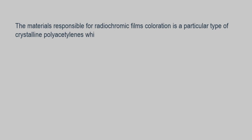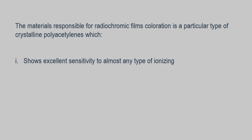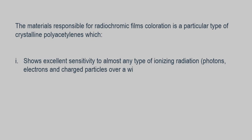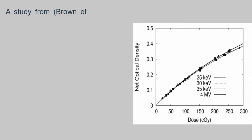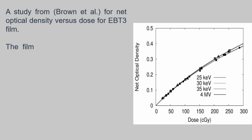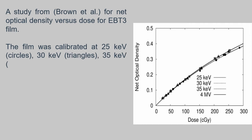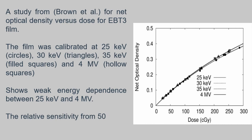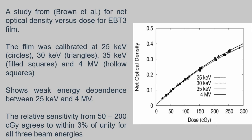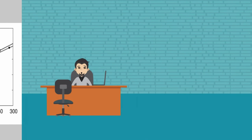The material responsible for radiochromic film coloration is a particular type of crystalline polyacetylene with characteristics including: 1) excellent sensitivity to almost any type of ionizing radiation such as photons, electrons, and charged particles over a wide range of energy and dose; 2) very low sensitivity to neutrons; and 3) almost total insensitivity to room light. A study from Brown et al. found net optical density versus dose for AP3 film calibrated at 25 keV, 30 keV, 35 keV, and 4 MV. The film showed weak energy dependence, and relative sensitivity from 50 to 200 cGy agreed to within 3% of unity for all three beam energies.